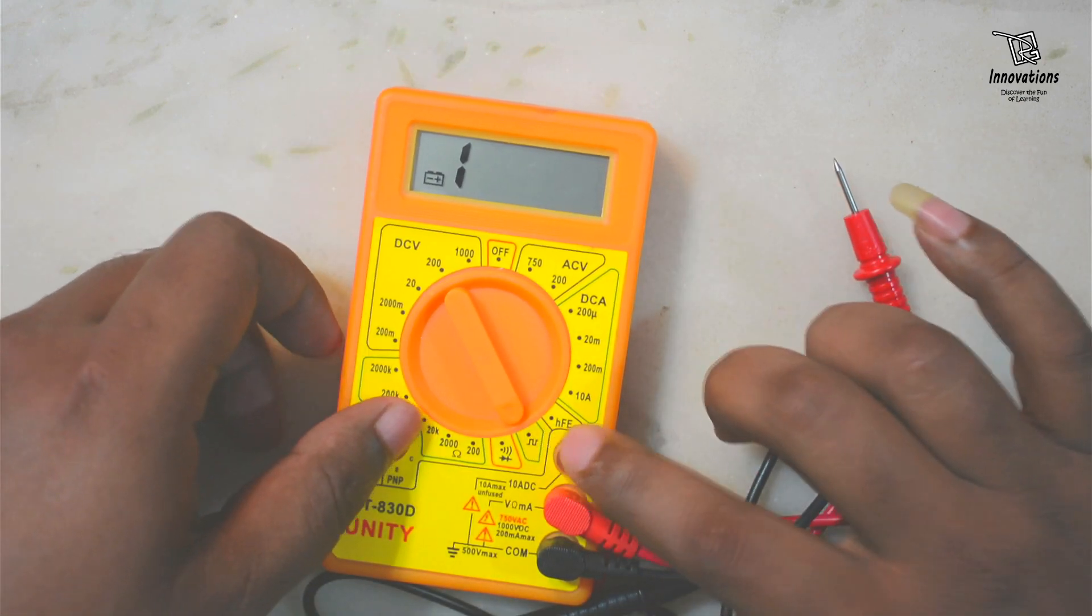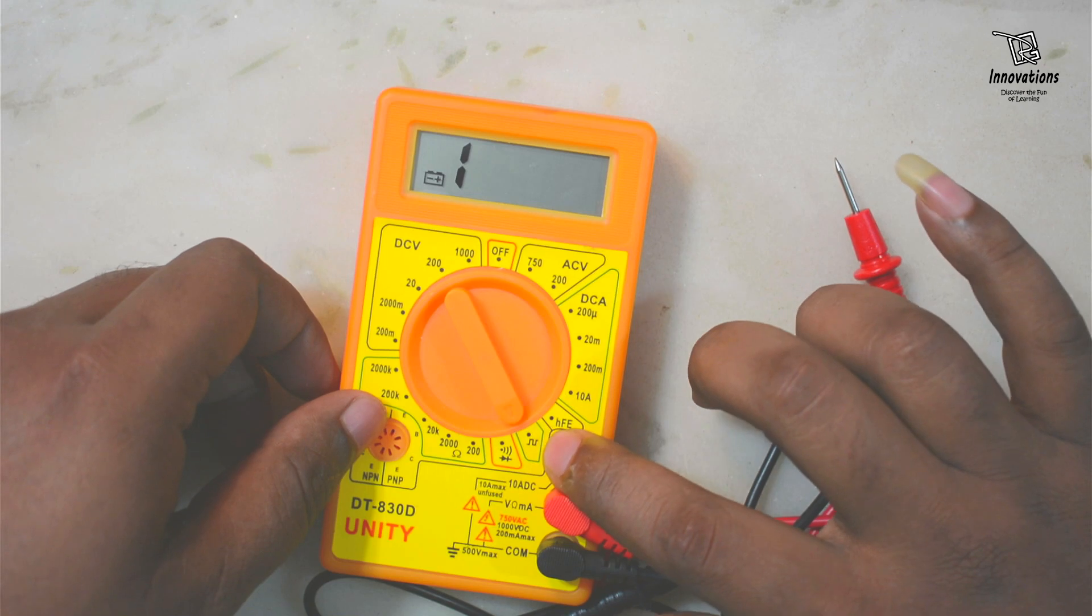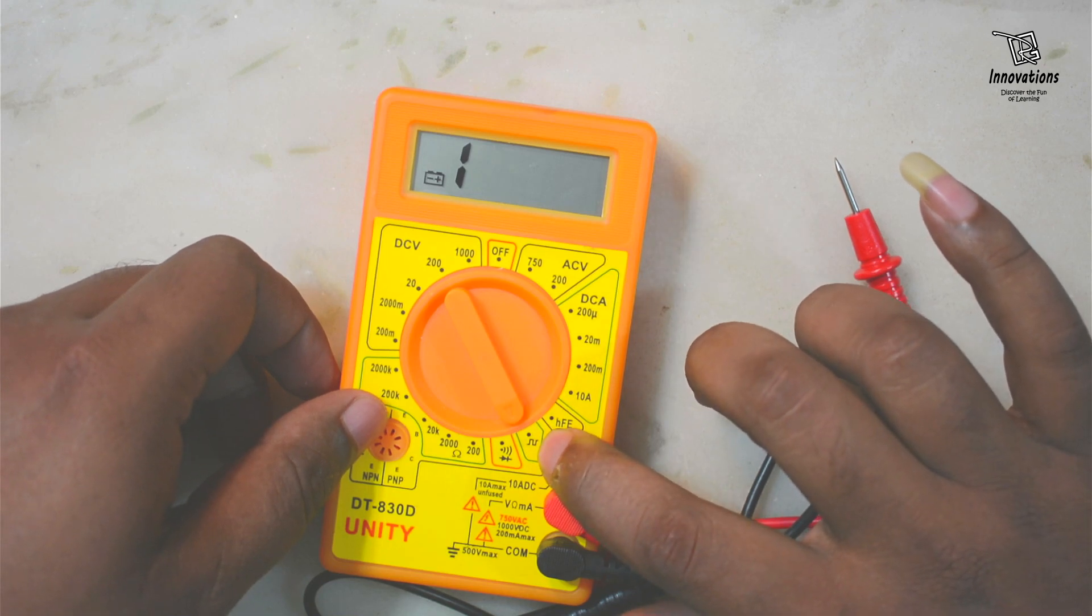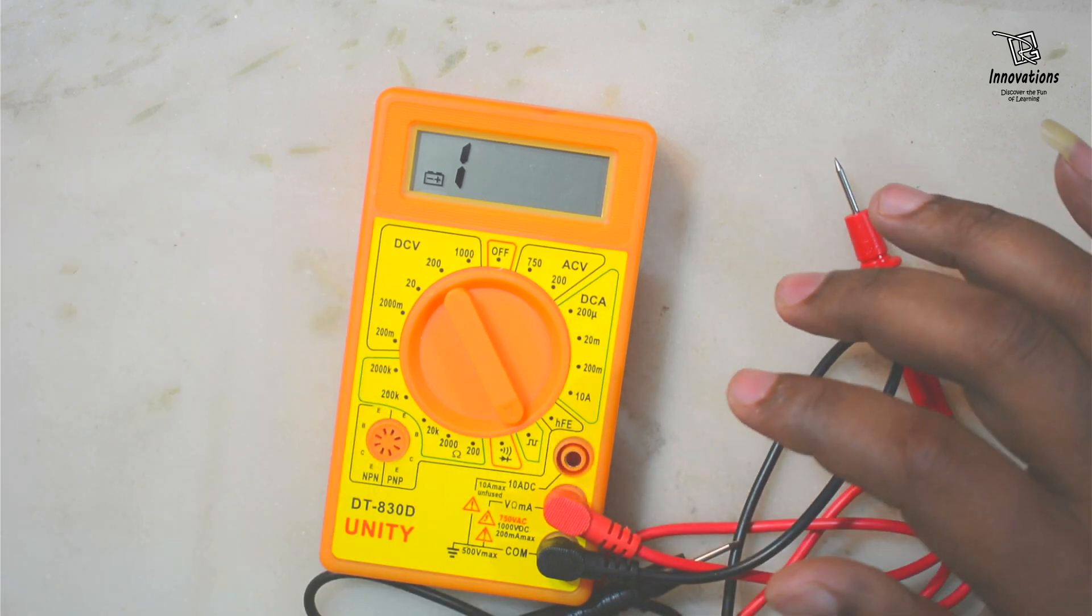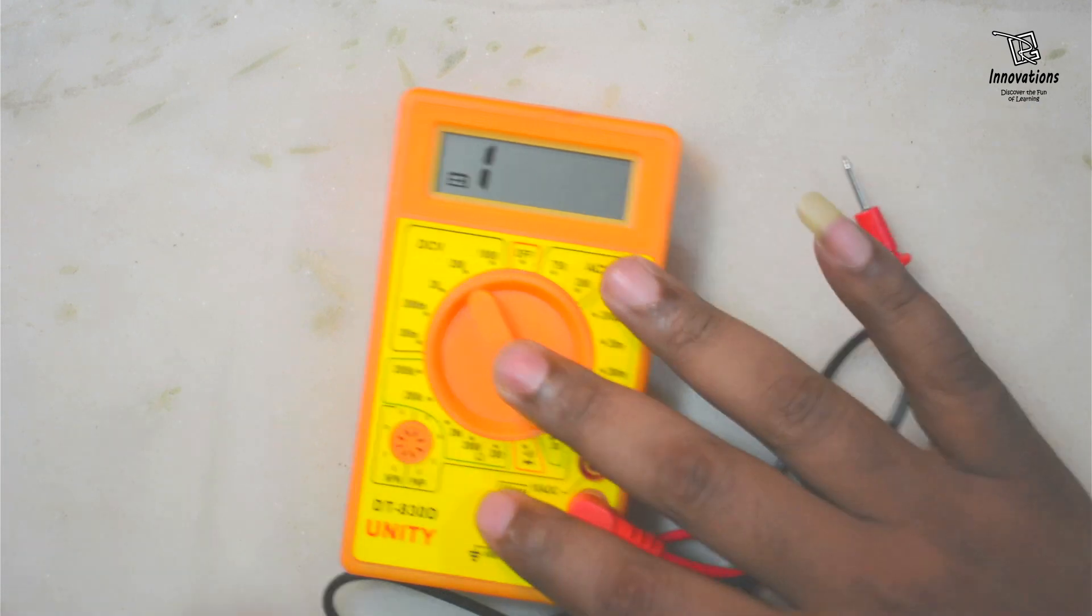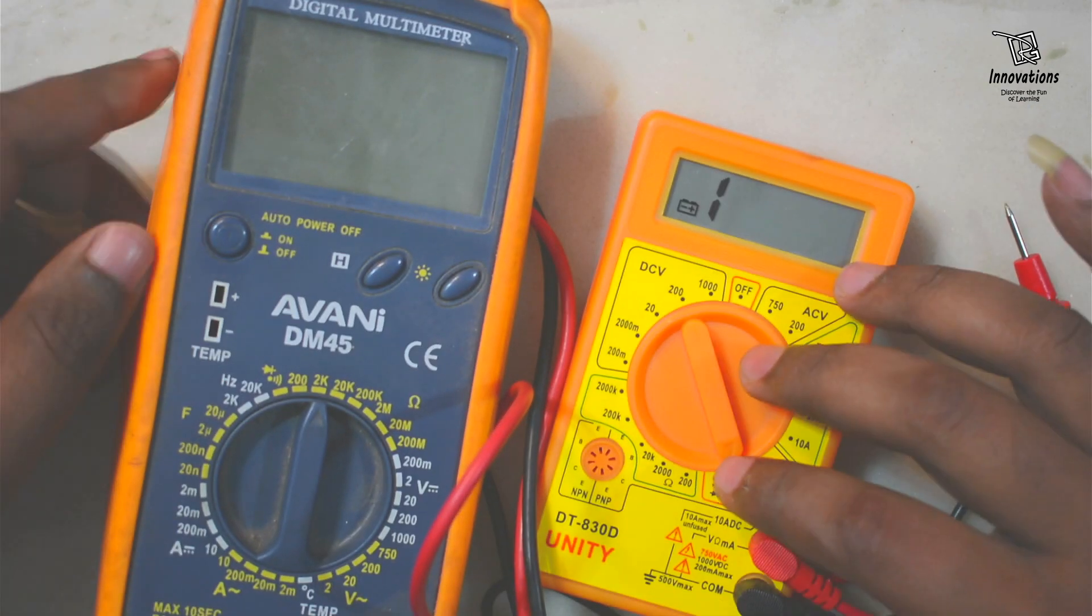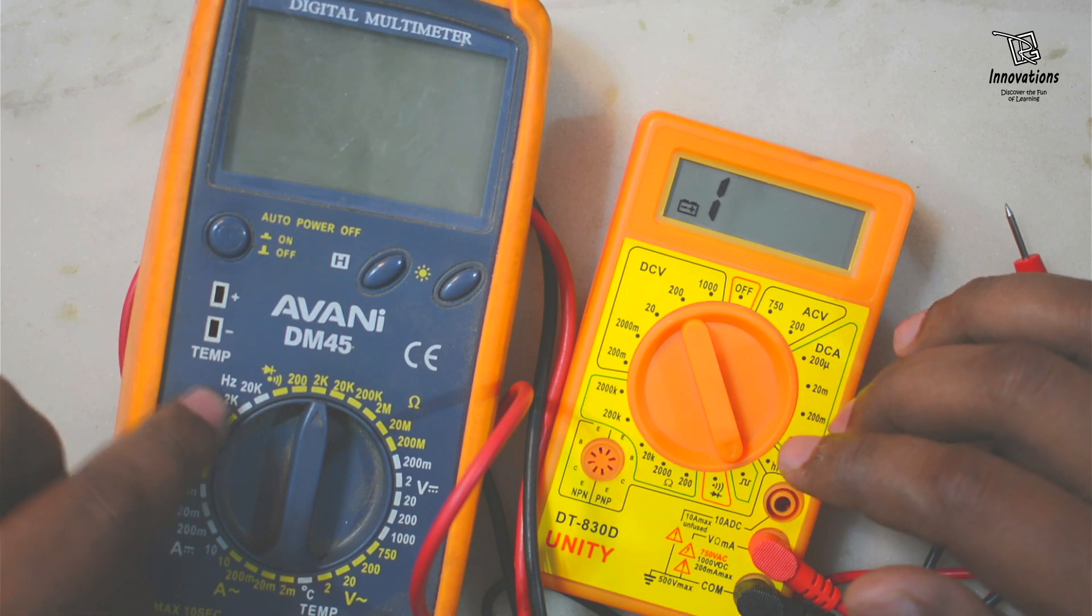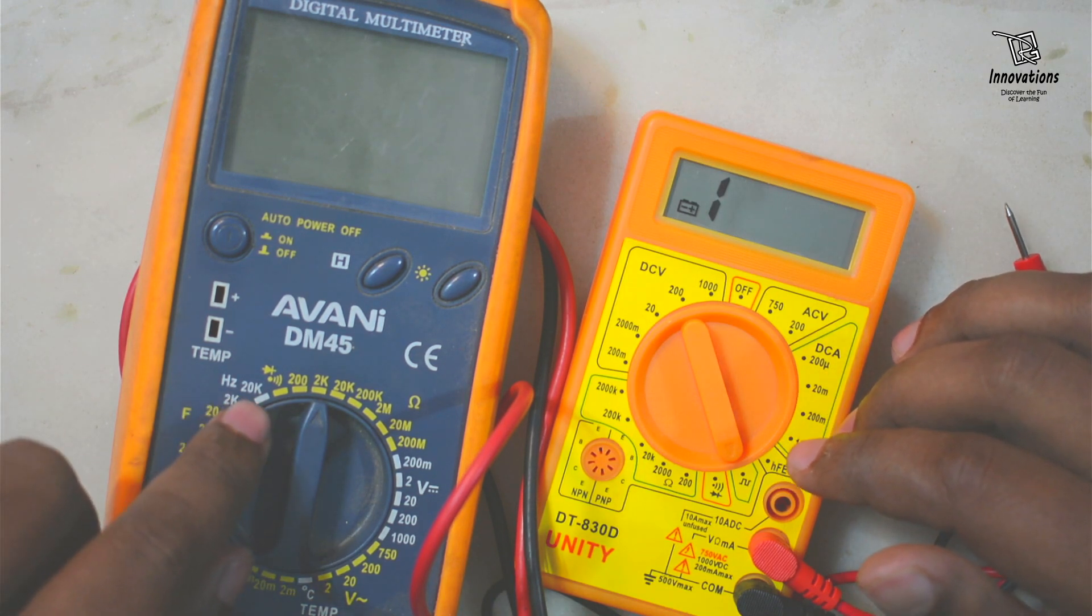Actually this does not happen. This function is used not to measure anything, but to generate a square wave frequency. Usually in other multimeters, in costlier multimeters like this, this multimeter also has a function like this. This is not graphically indicated. It says hertz, Hz means hertz. It says 2k and 20k.